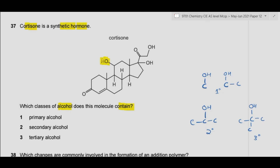Let's look at the OH groups — this is OH, this is OH, this is OH. You only have three alcohol groups. This carbon atom is directly attached to two other carbon atoms, so this is a secondary alcohol functional group. This carbon of OH is directly attached to three other carbon atoms, so this is tertiary alcohol. And this carbon atom is directly attached to only one carbon atom, so it is primary alcohol. As all three options are correct, the answer is A.